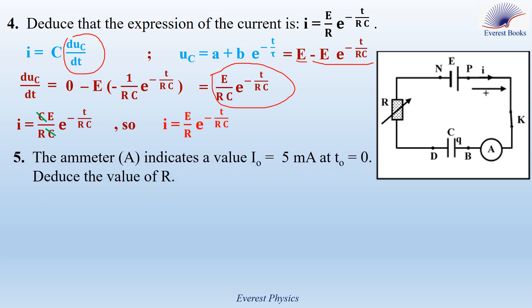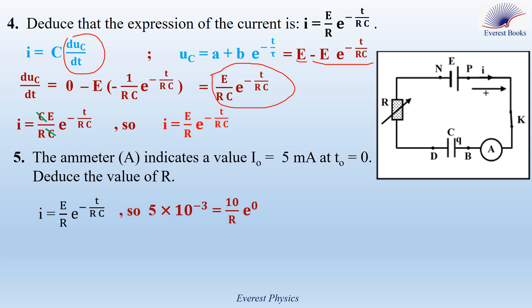Part 5: the ammeter indicates a value I₀ equal to 5 milliamperes at time zero. Using the expression of the current, substitute I equals 5 times 10⁻³ amperes, E equals 10 volts, and t equals zero. So R equals 2000 ohms.